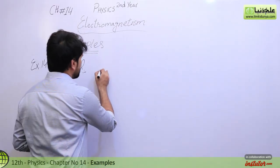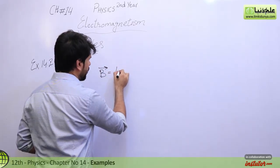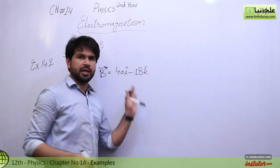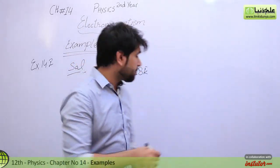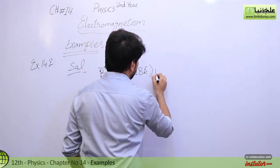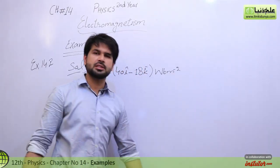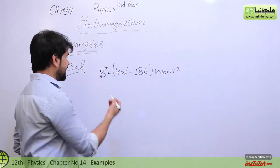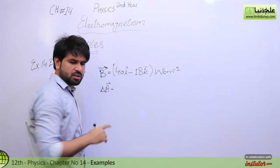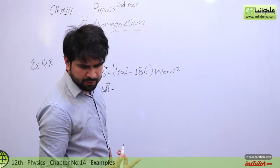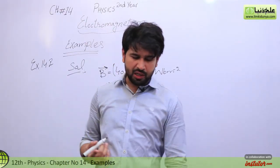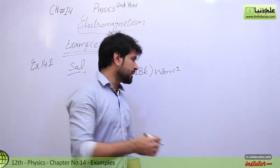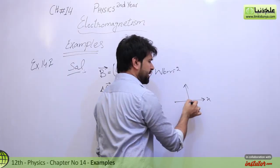We have the magnetic field given in vector form: 40 î minus 18 k̂, with units Weber per meter square. Another vector quantity given is the area of the loop, with magnitude 5.0 cm square. The area loop lies flat in the xy-plane.